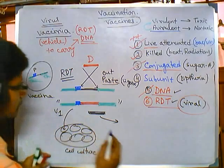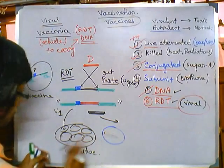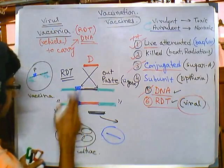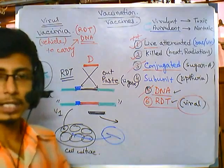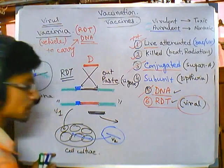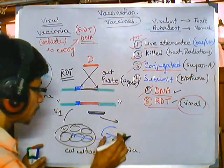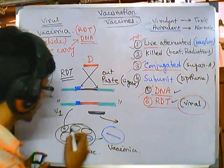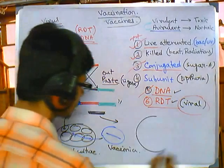We take the vaccinia virus — call it V2 — with its complete genome, and we also have our prepared construct — call it V1. We transfect cells in a cell culture with both of these simultaneously: V1 (the RDT-prepared construct) and V2 (the intact vaccinia virus genome). We infect the cells with both of them together.